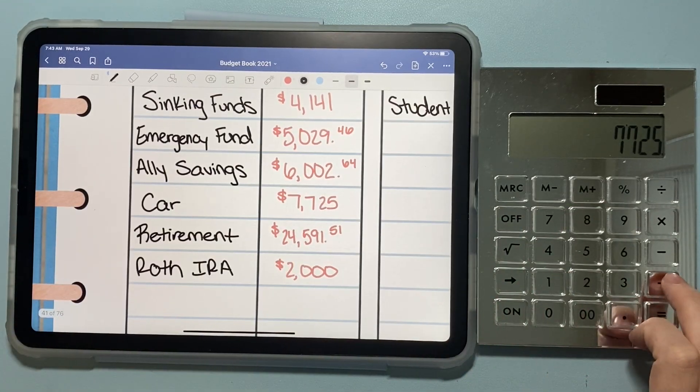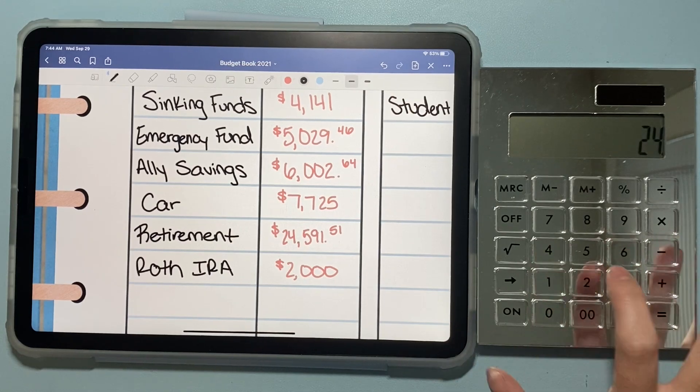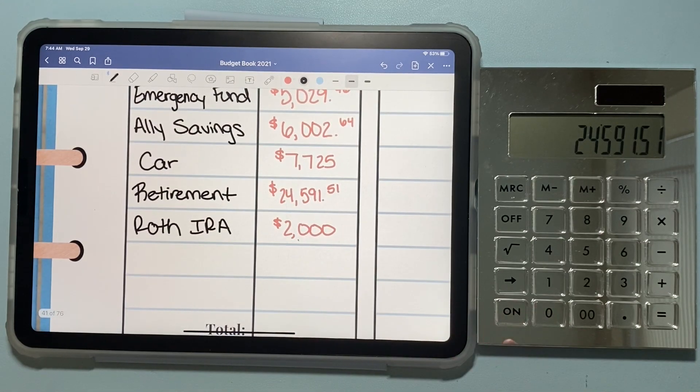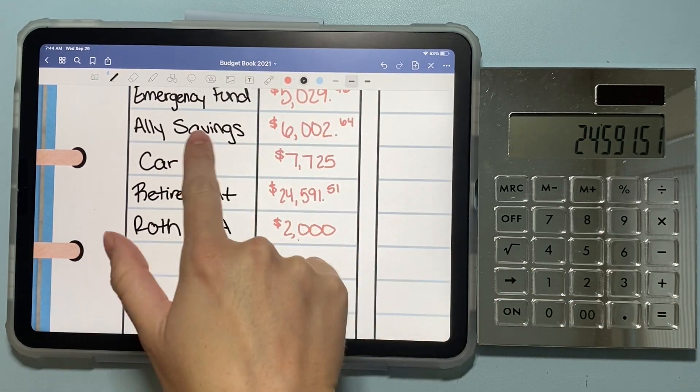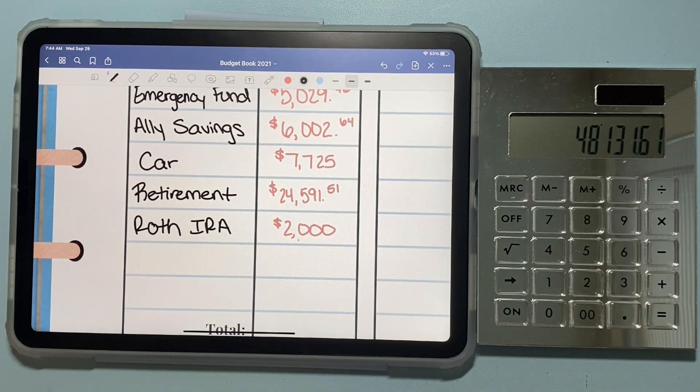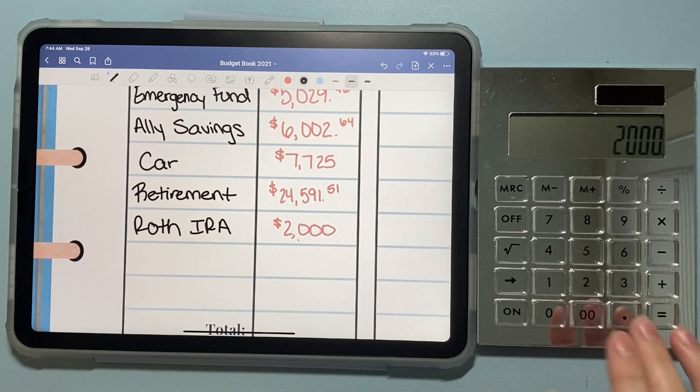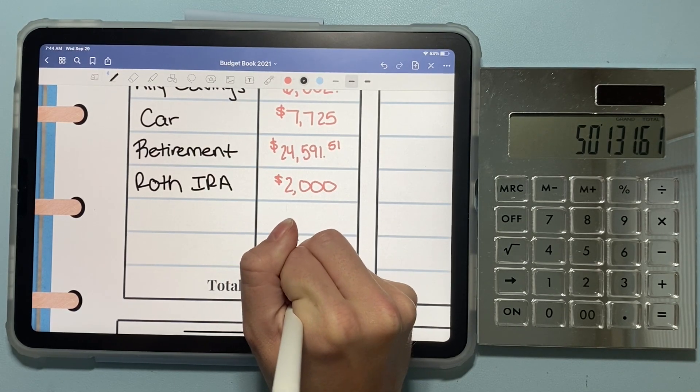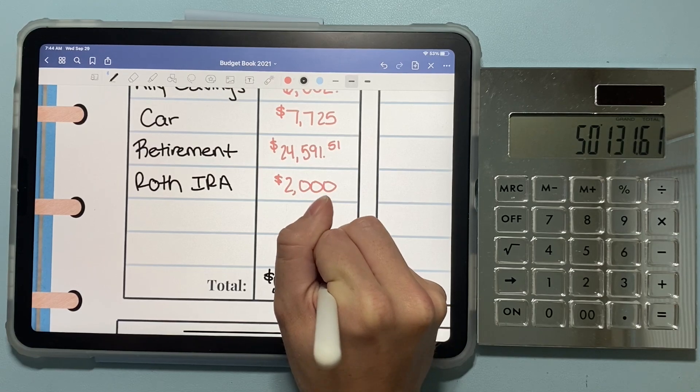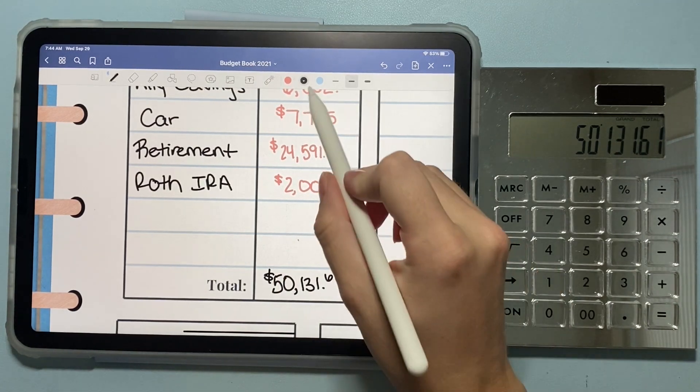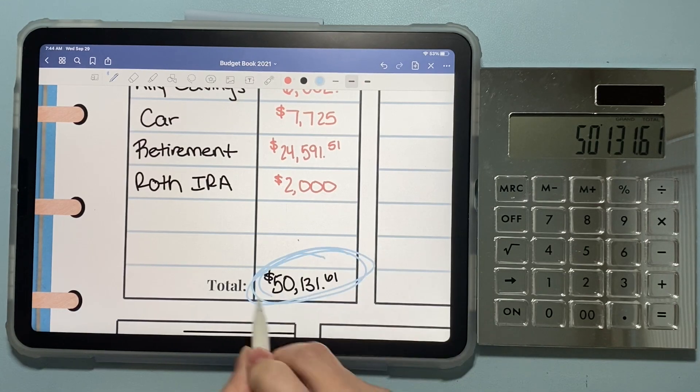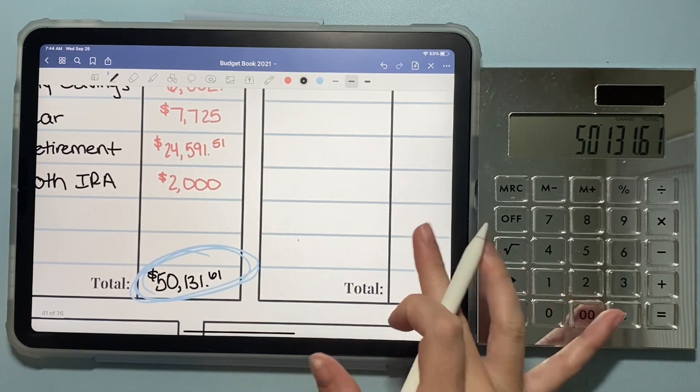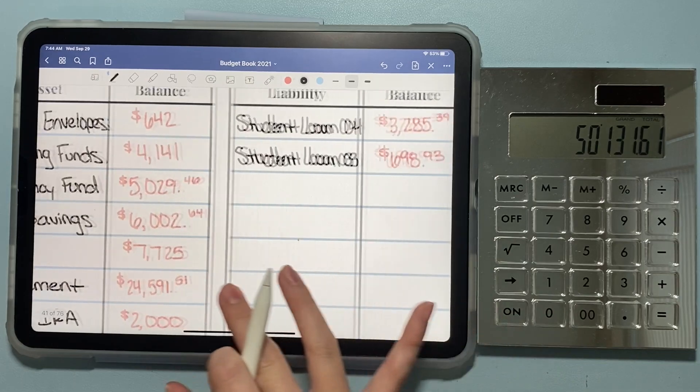And then as of today, my retirement account for my full-time job, I have $24,591.51. And then I did open a Roth IRA this month and just transferred some money out of my Ally savings account into there. And it has not been invested yet, so it's just at a flat $2,000. So total in assets, we have $50,131.61. So we've reached that 50K asset mark, which is super, super cool. So I honestly never thought that I would have that much in assets in like hold, hard cash. So that's really nice.